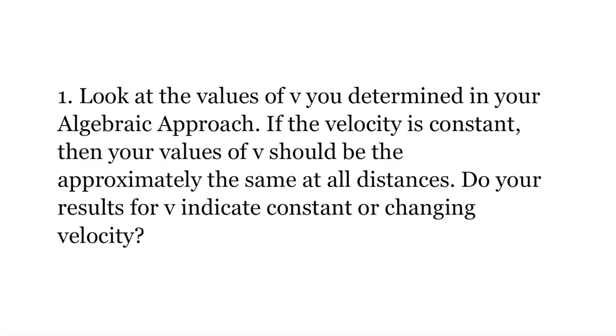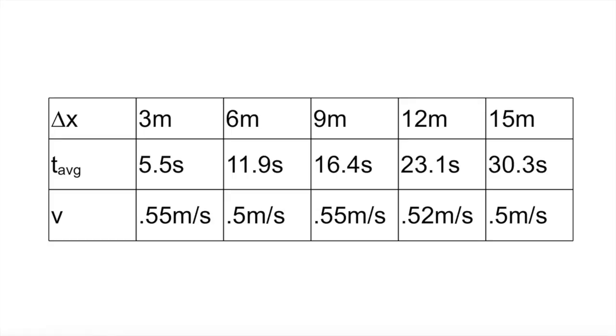Data analysis question 1: Look at the values of V you've determined in your algebraic approach. If the velocity is constant, then your values of V should be approximately the same at all distances. Do your results for V indicate constant or changing velocity? Due to the results varying by less than 0.1 meters per second for each distance, we can infer that the ball was traveling approximately at a constant velocity.